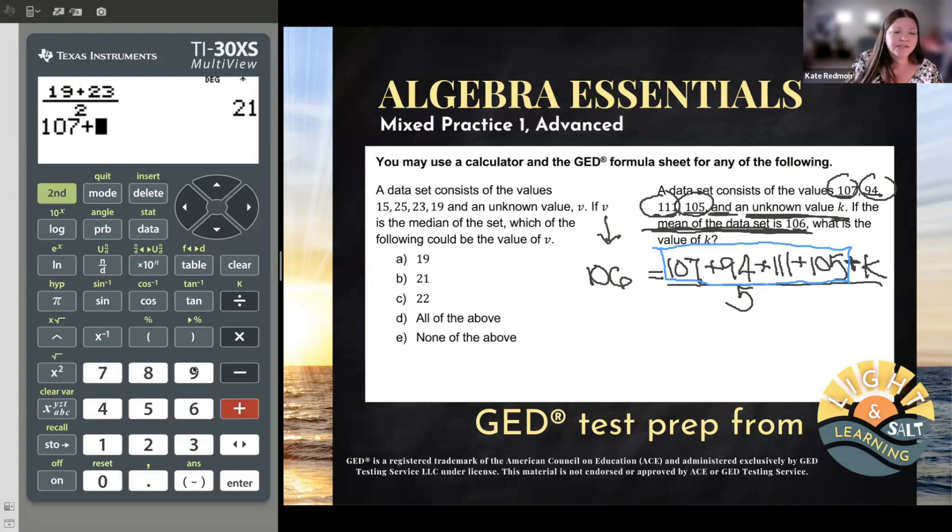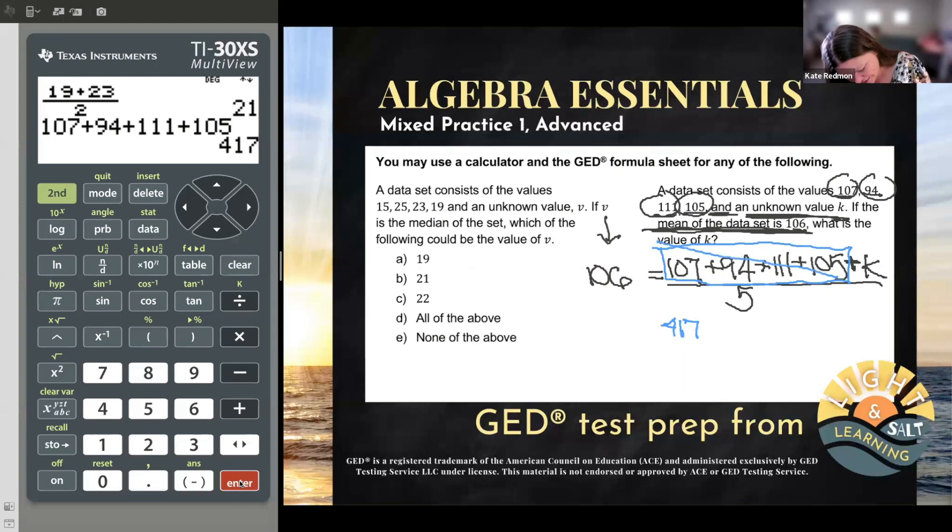So 107 plus 94 plus 111 plus 105 gives me 417. So that whole big ugly portion came to 417, and now that that's a little simpler and I dropped down the rest of the expression on the right-hand side, so plus K and divided by five, and I dropped down the expression on the left-hand side, now I can see it's just a two-step equation to solve.